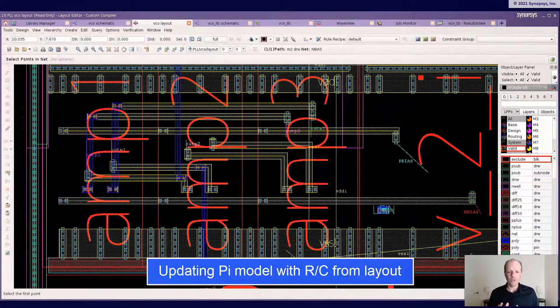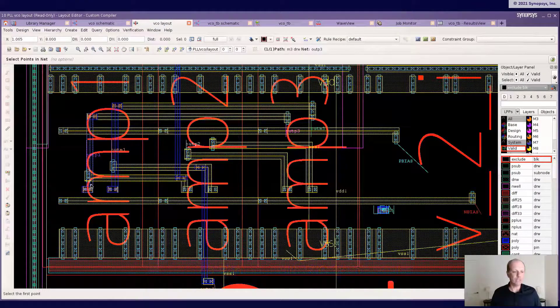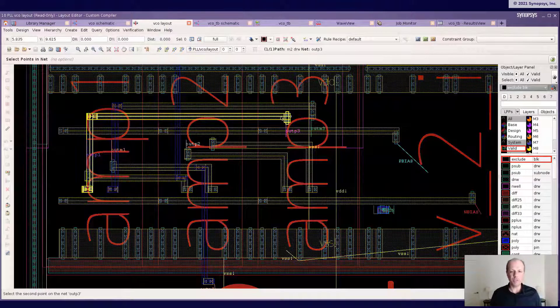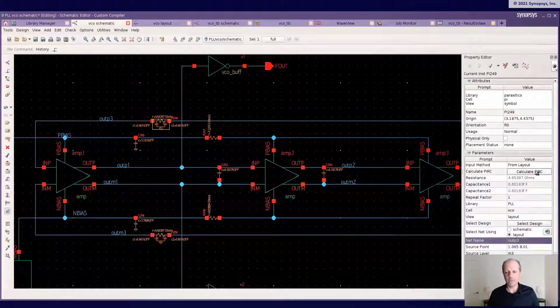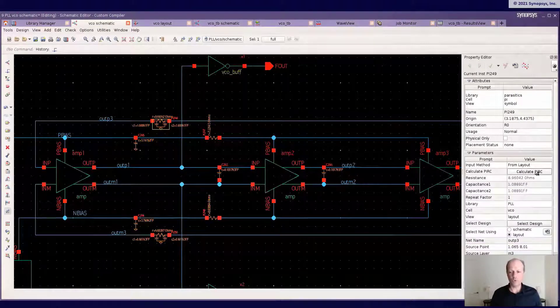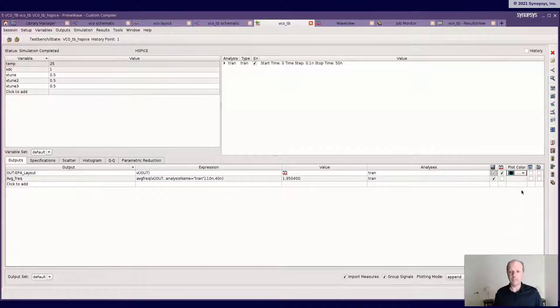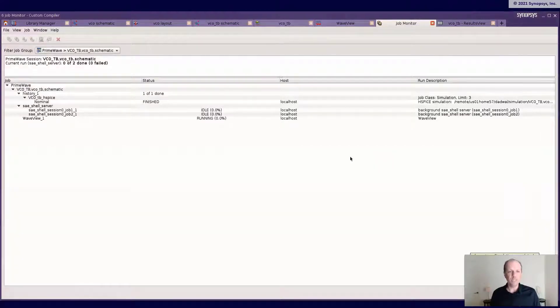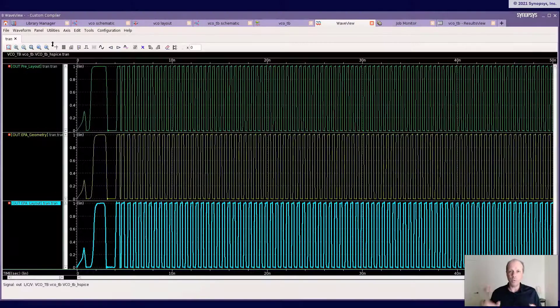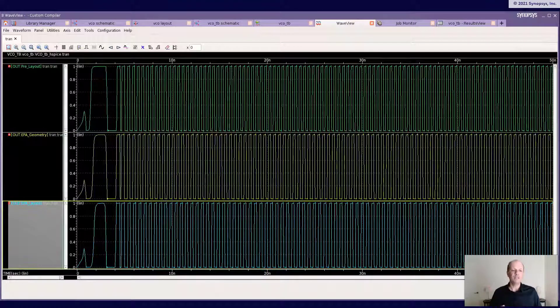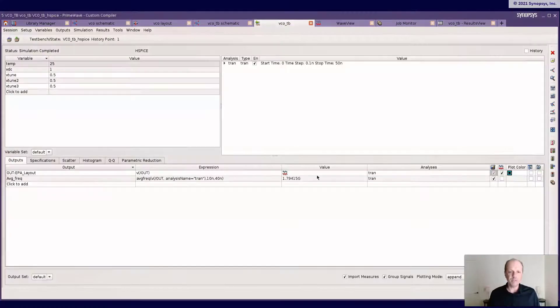The ability to go to the layout and select the specific points I want to take into account for the resistance calculation gives me more control over that calculation. So I've updated the parasitic devices using the layout that we've been implementing. I'll rerun the simulation again with the estimated parasitics that are refined using the preliminary layout.